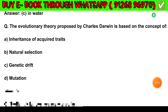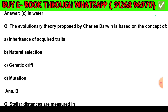Question number 9. The evolutionary theory proposed by Charles Darwin is based on the concept of: Option A — Inheritance of acquired traits. Option B — Natural selection. Option C — Genetic drift. Option D — Mutation. The answer is Option B: Natural selection.